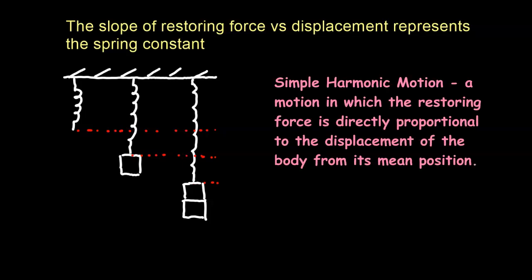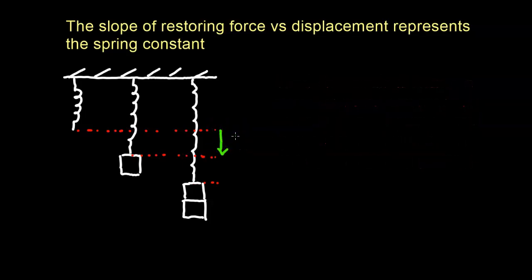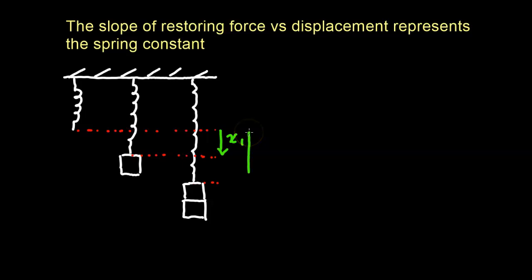In this video we're going to review simple harmonic motion. We're going to start with a vertical spring. When the vertical spring is not stretched it has a certain length. When we put a mass on the spring it stretches downward and we have a certain amount of displacement, called x1. If we put more mass, let's say we double the mass, we get even more displacement, called x2.